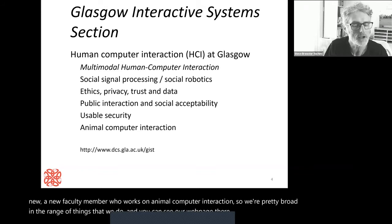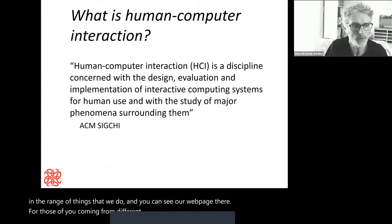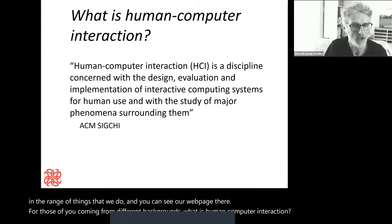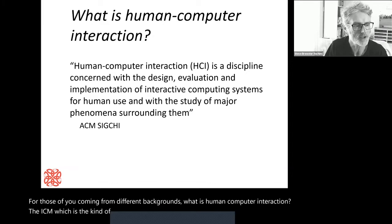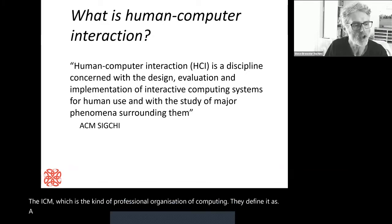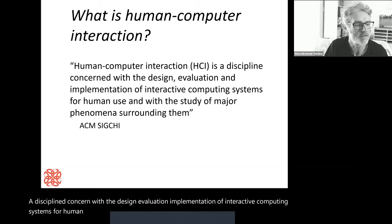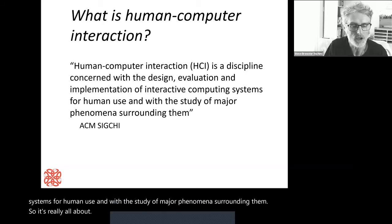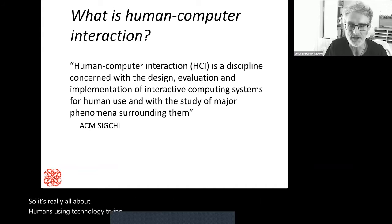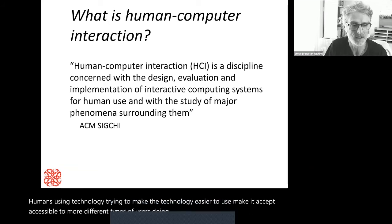For those of you coming from different backgrounds, what is human-computer interaction? The ACM, the professional organization of computing, defines it as a discipline concerned with the design, evaluation, and implementation of interactive computing systems for human use. It's really all about humans using technology — trying to make the technology easier to use, more accessible to different types of users doing different types of things in different situations.